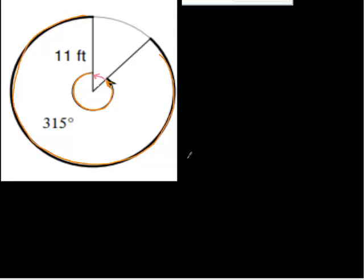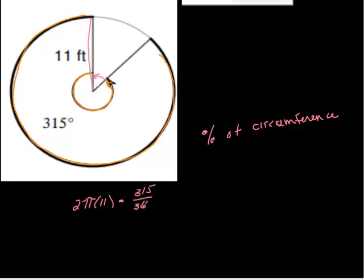So this is what we're going to start with. We're going to start with 2π. We have r is 11, right? The radius is from here to here. So the radius is 11 times the percent of circumference that we get. The percent of the circumference that we get is 315 degrees of the 360 degrees possible.